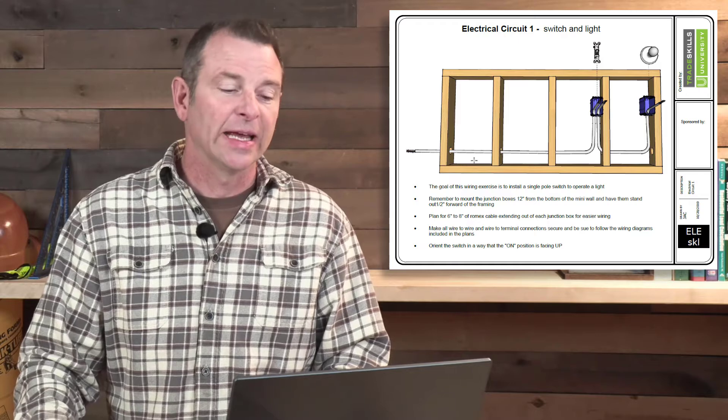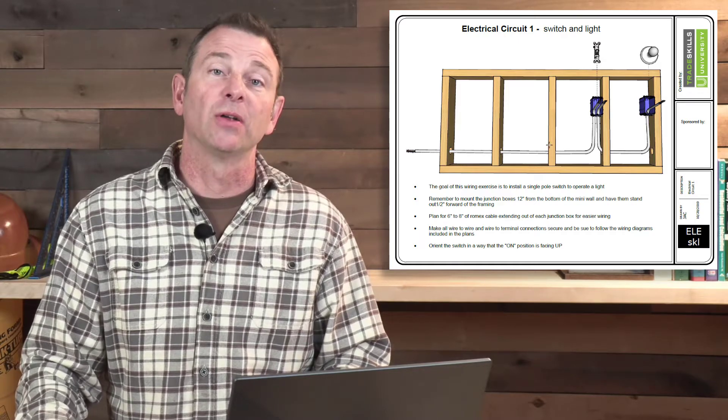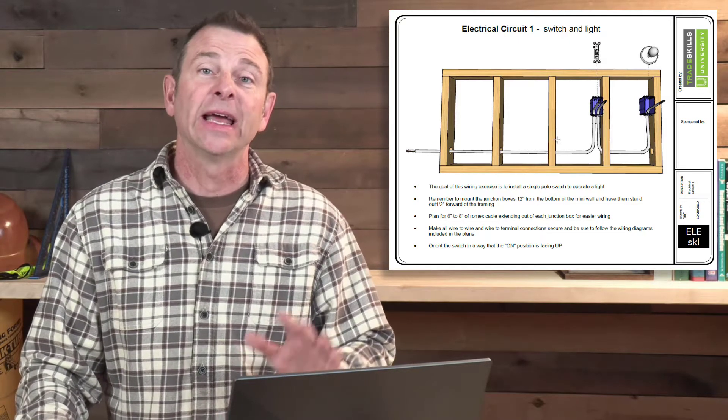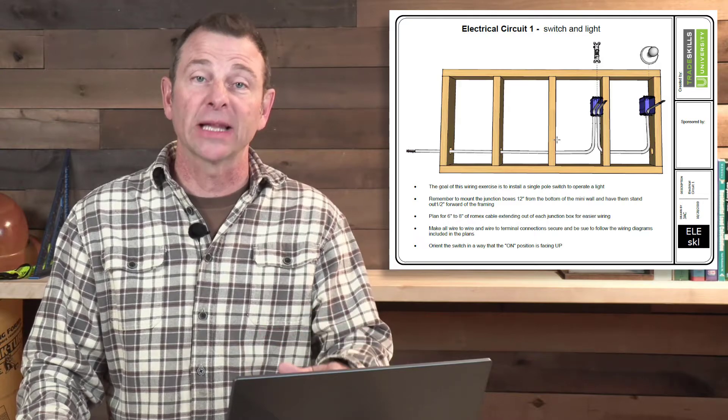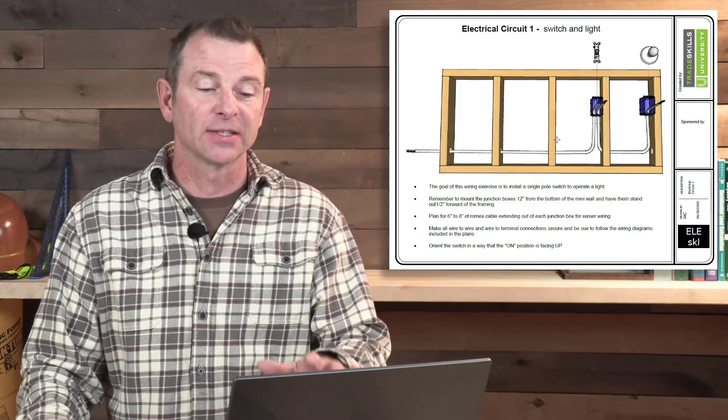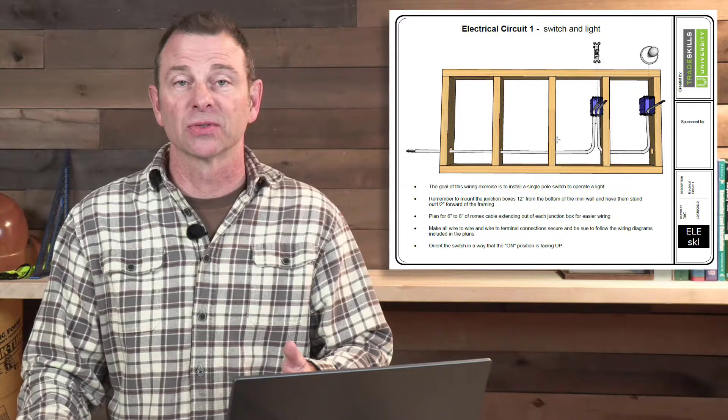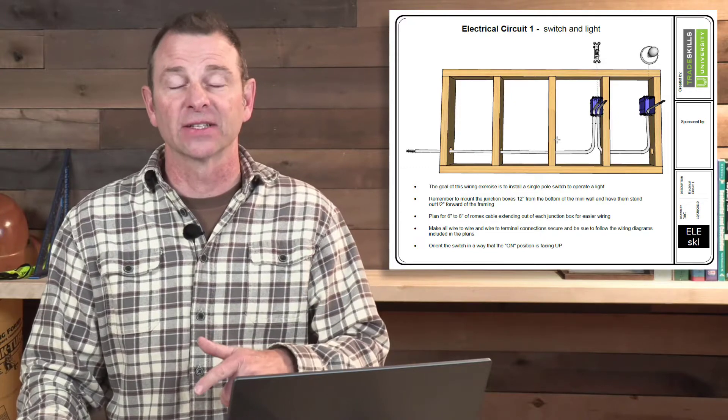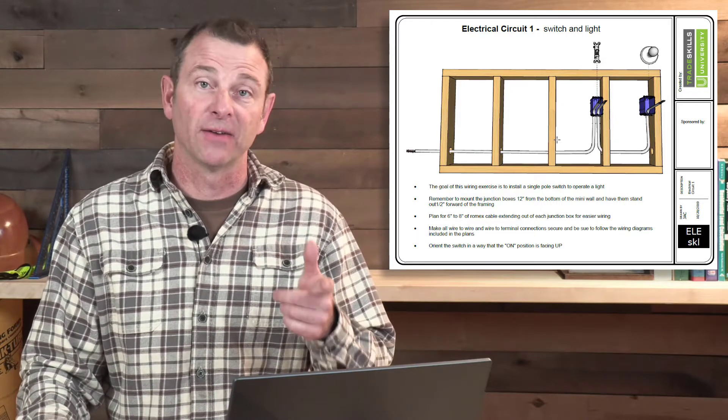There are pre-drilled holes in the bottom of this wall to run the cables through. Circuit number one or plan set number one has the students installing a single pole switch and then a light fixture that is turned on and off by that switch.